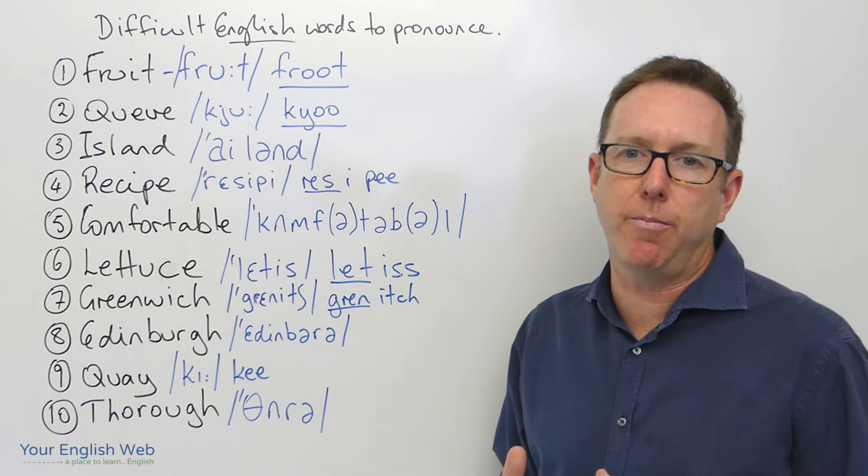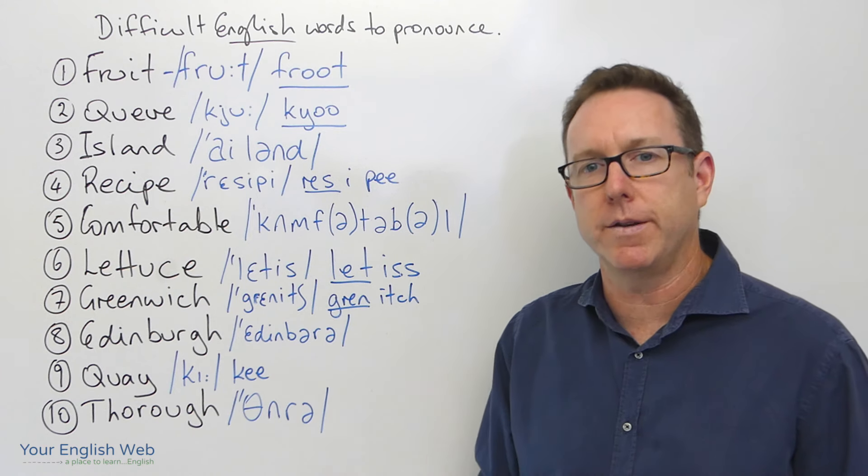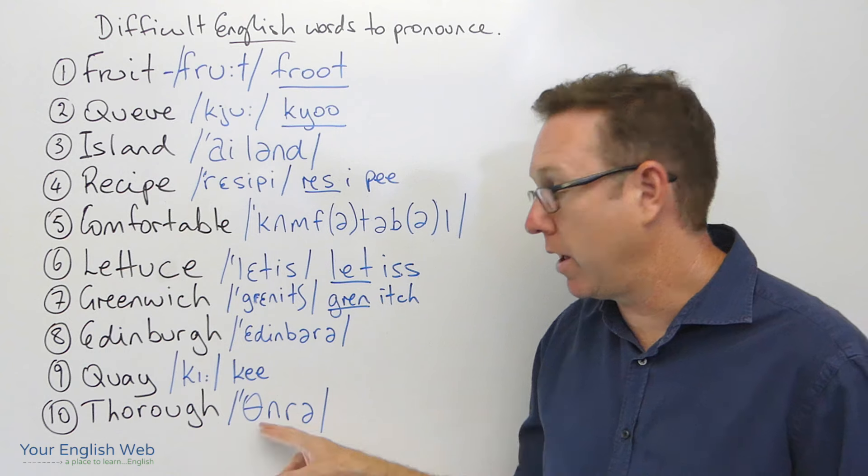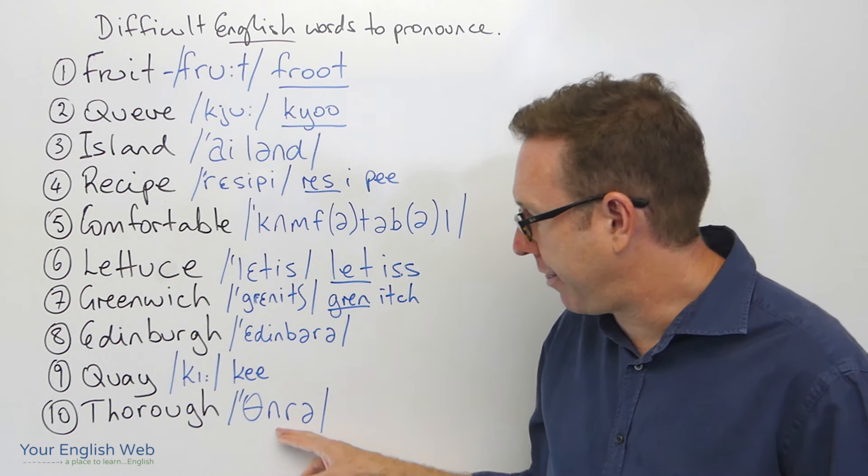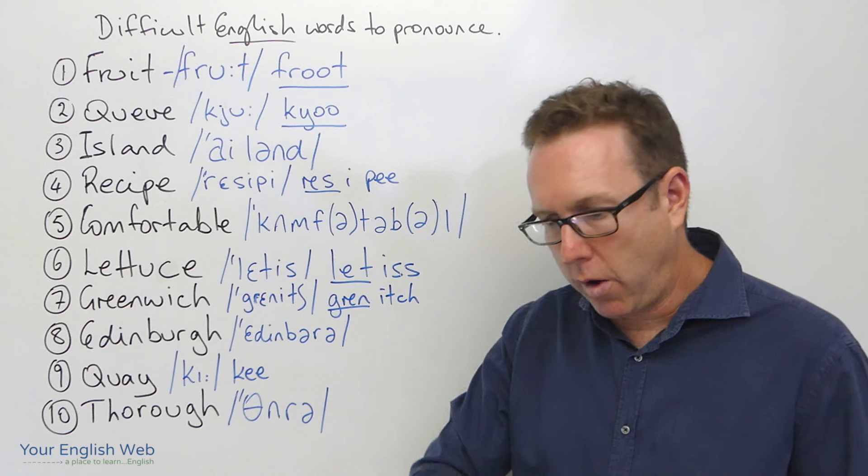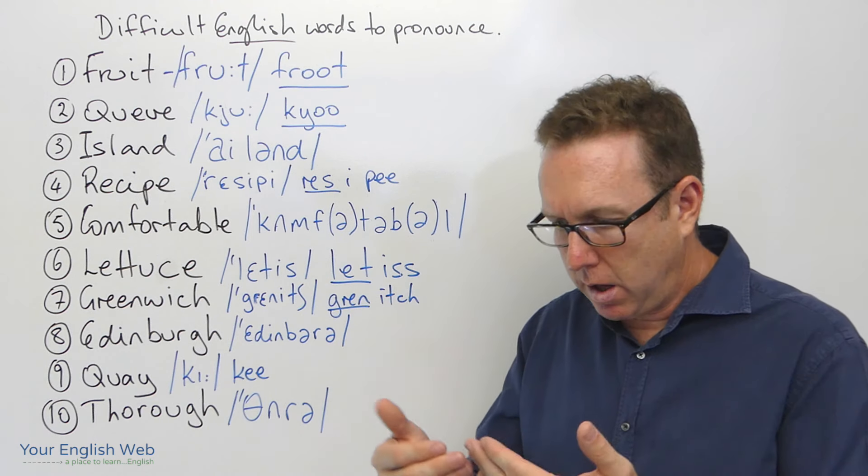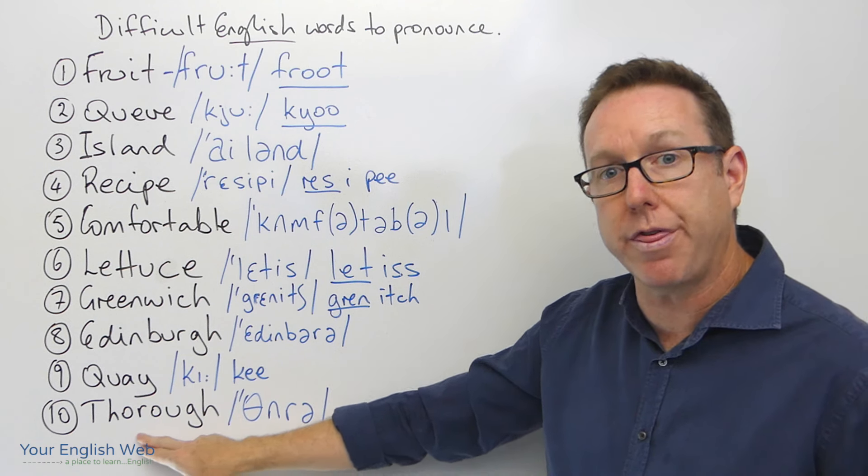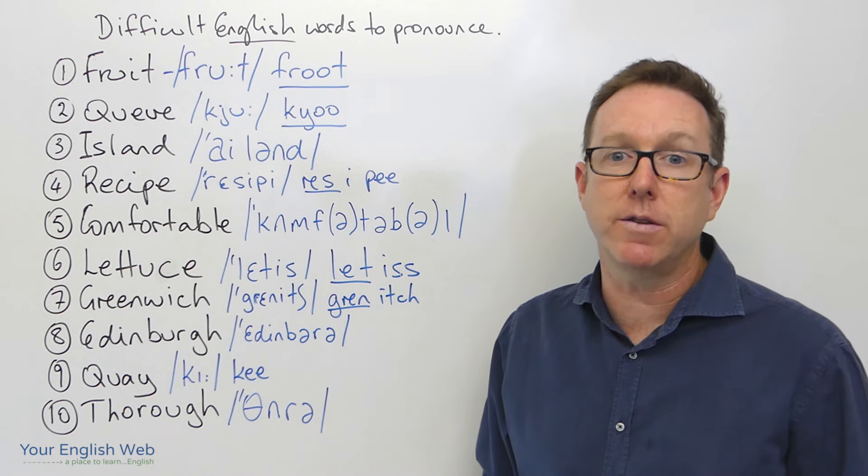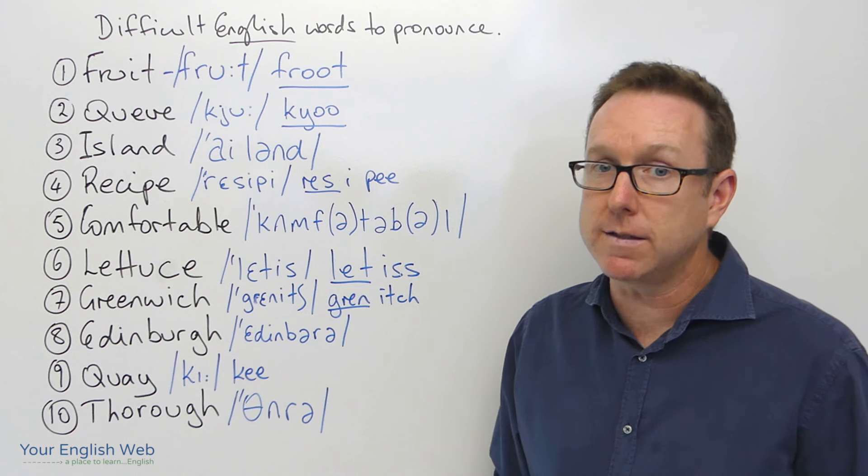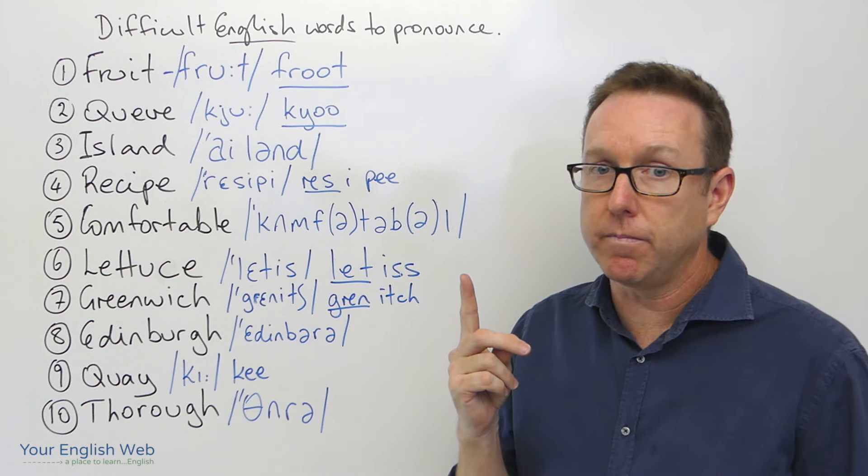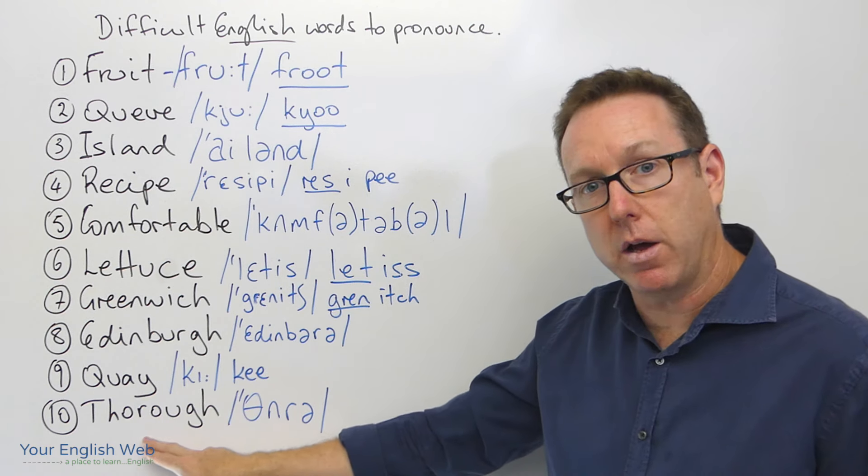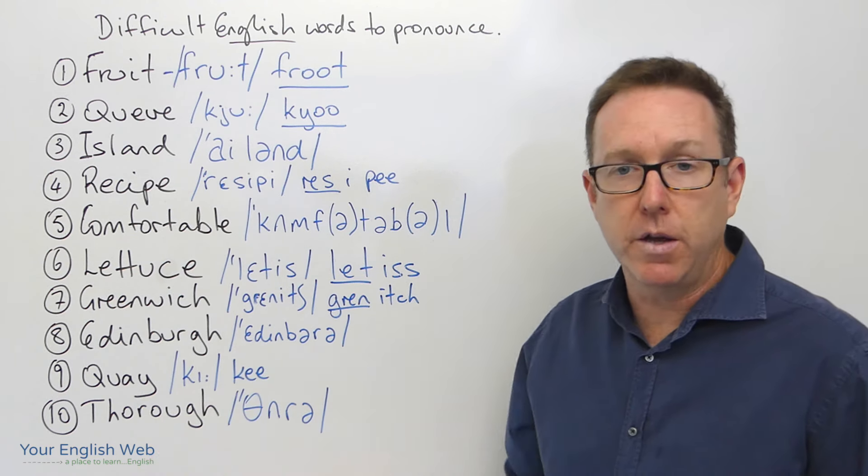The last one here, this word we can pronounce two different ways. There's a British pronunciation, the way that I pronounce the word, which is thorough, thorough. Thorough means that you go over something in detail, thorough or thoroughly. Thorough is the word, and the Americans can pronounce the word like this: thorough, thorough. Again, thorough, but I pronounce the word thorough.